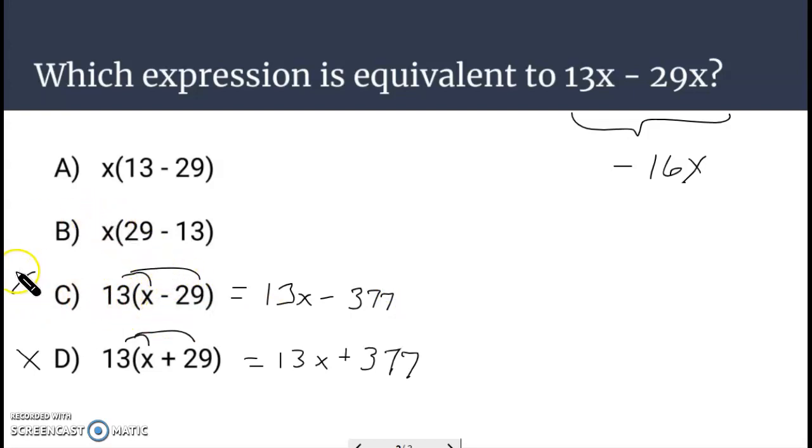On B, we could distribute the x and we get 29x minus 13x. That looks similar to the original problem up here, but the numbers are reversed. If we simplify this down, we'll get a 16x. Now we're looking for a negative 16x. Hopefully A works.